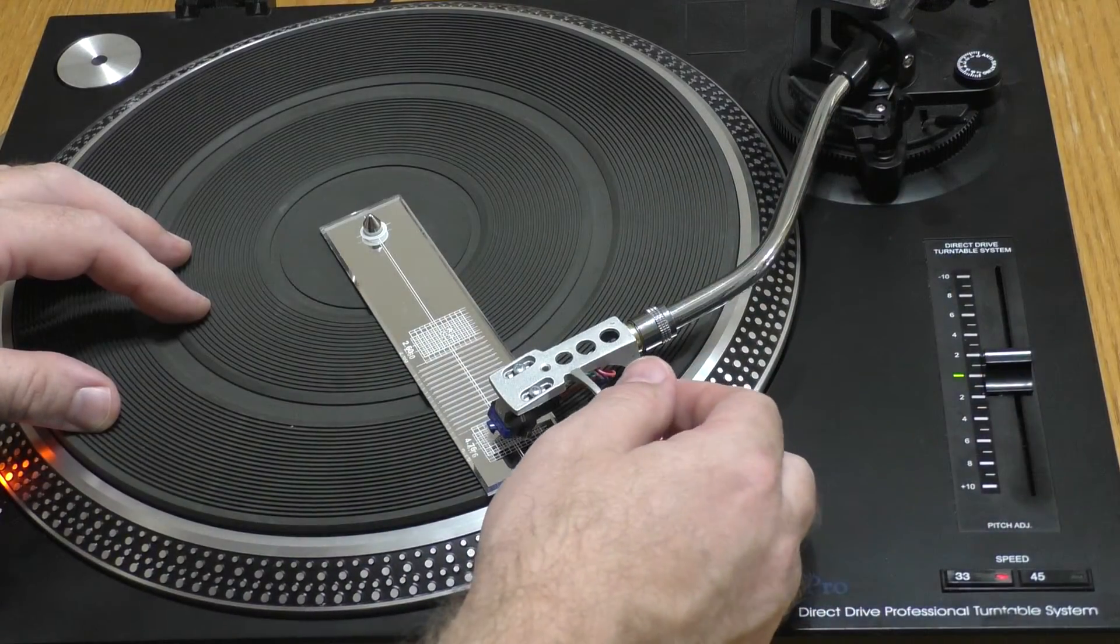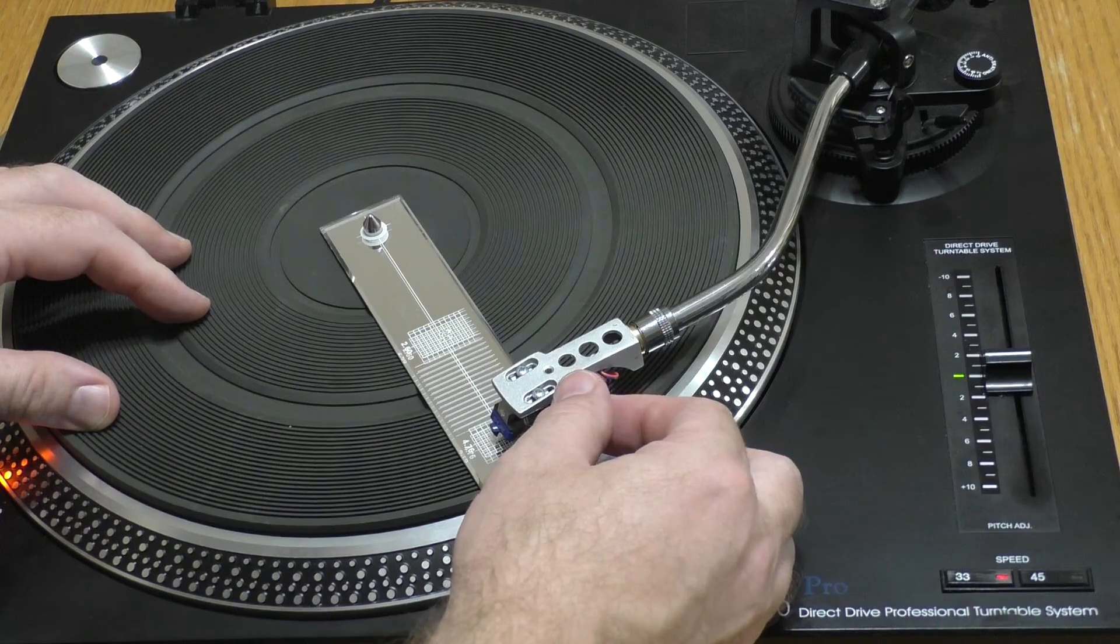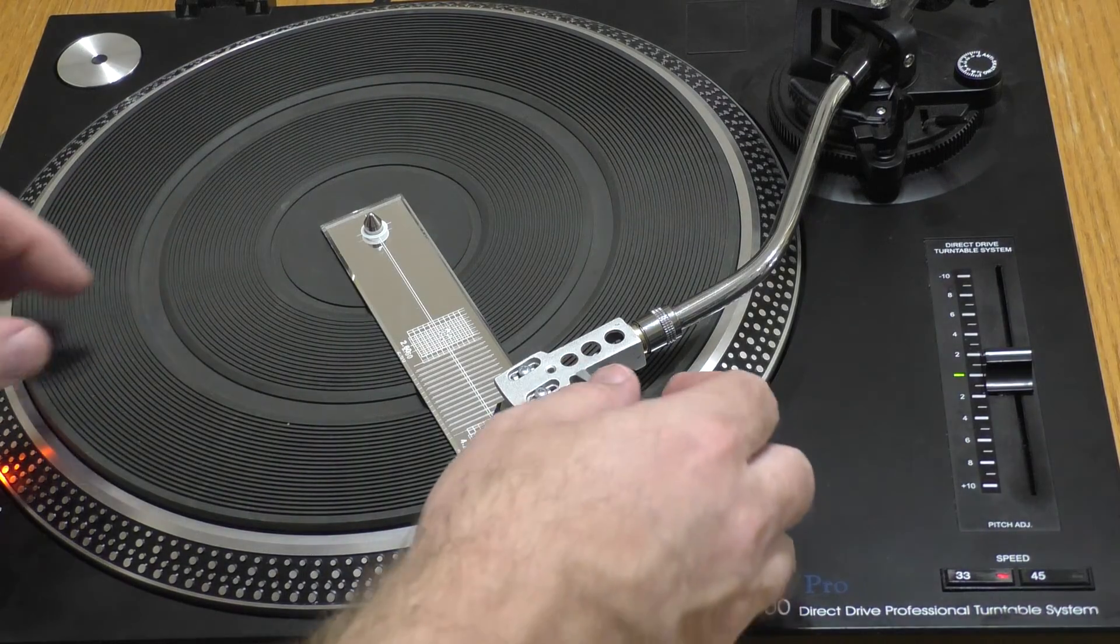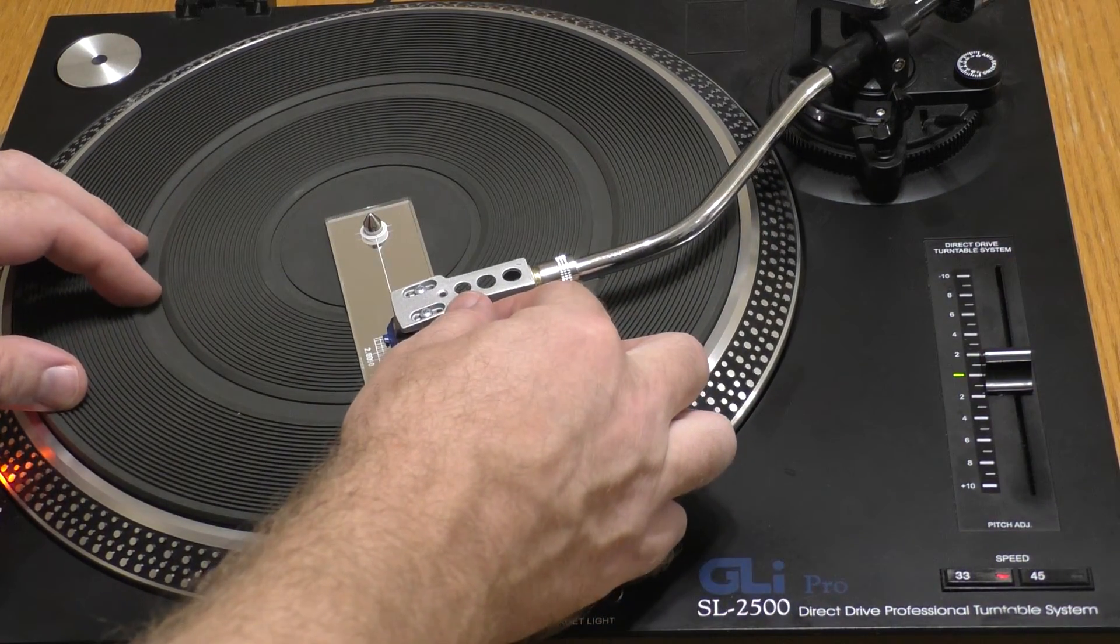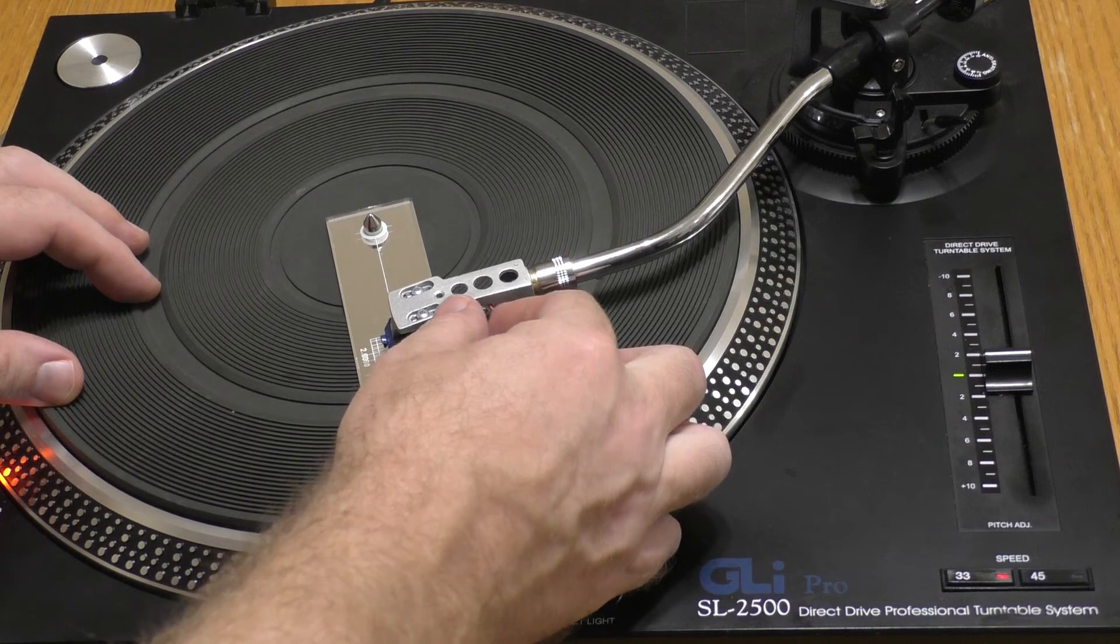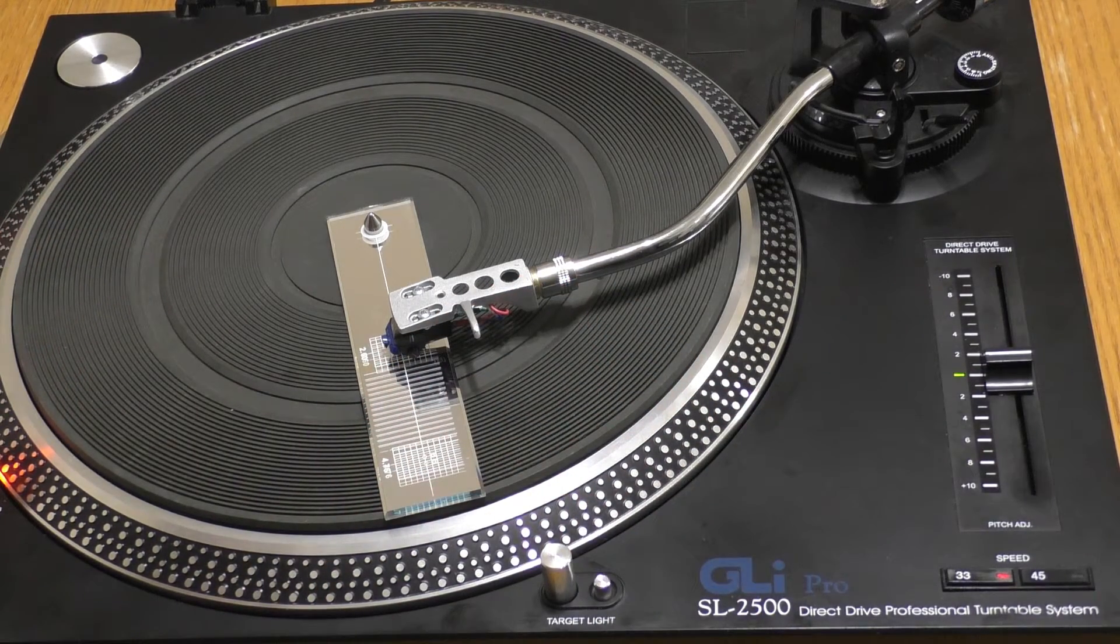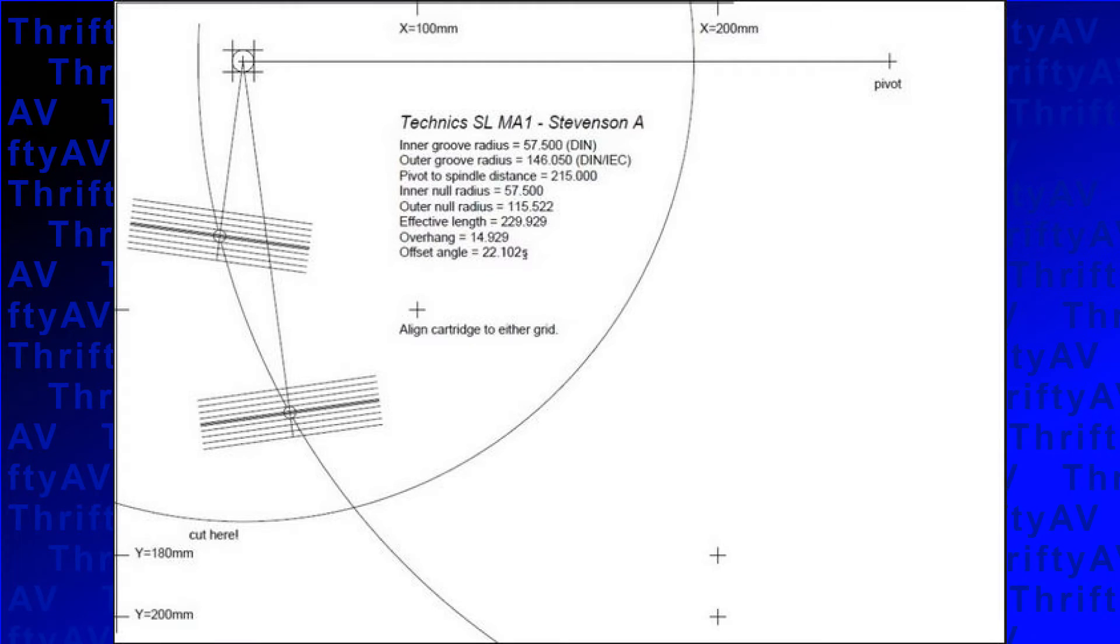You can then use the stylus protractor to ensure that the stylus will be tangent to the record grooves at two optimized locations. I purchased a mirrored protractor, but tonearm specific templates can be downloaded from the internet and printed on your home printer to do the same thing.